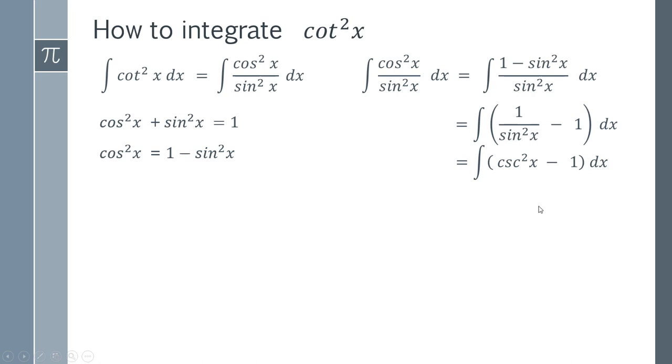The next step is to realize that 1 over sine squared is actually cosecant squared. So the cosecant is simply 1 over sine. So 1 over sine squared is going to be that squared. So we've now got a much nicer integration here.